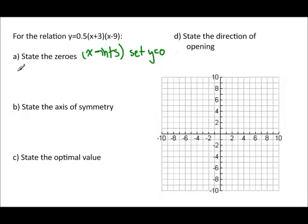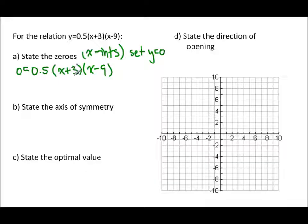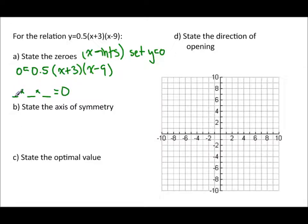So that means zero equals 0.5 times (x plus 3) times (x minus 9). Now, the reason each factor gives us a zero is because if I want zero to be the answer and I've got a bunch of things multiplied to be zero, one of them has to be zero. I can't multiply three numbers that are all non-zero and get zero as an answer.